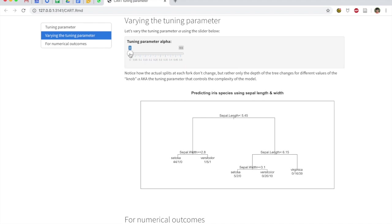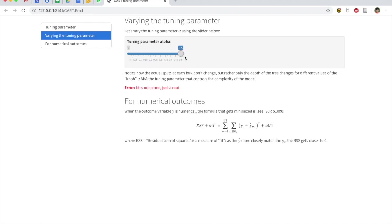And also, if we set alpha to be very high, we get the least complex or the most simplest possible tree, which is simply a stump.